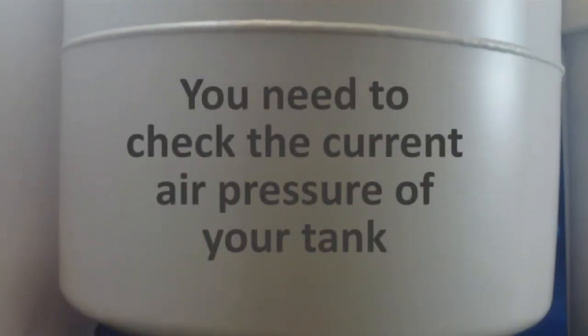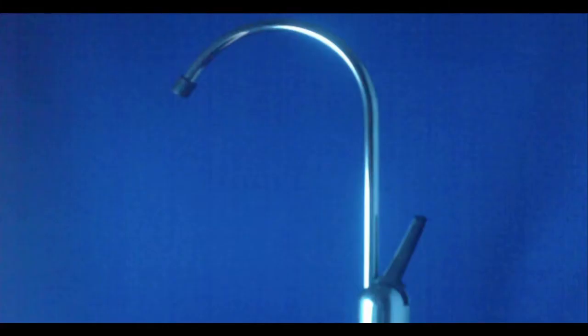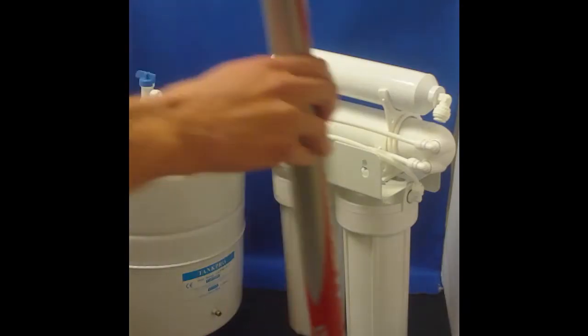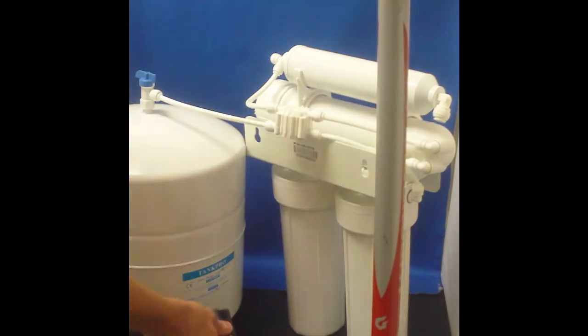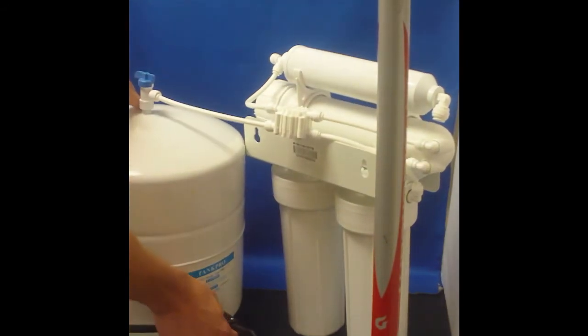To ensure that this is the problem, you need to check the current air pressure of your tank. Before checking the amount of air pressure, be sure to empty your tank by draining all of the water from your RO system. Open the RO faucet and wait until no more water flows. You can use a bike pump to help speed the tank draining.